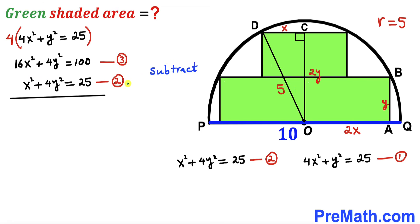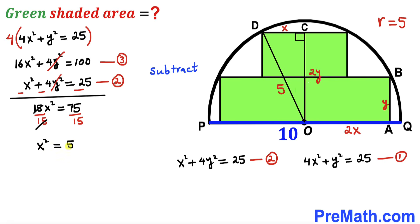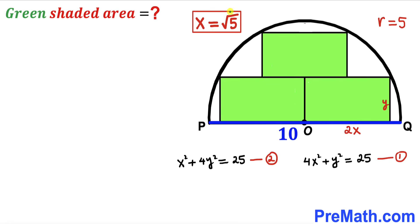Now we subtract Equation 2 from Equation 3. The 4y² terms cancel, and on the left-hand side we get 15x² = 75. Dividing both sides by 15 gives x² = 5. Taking the square root of both sides, x equals the positive square root of 5 units.